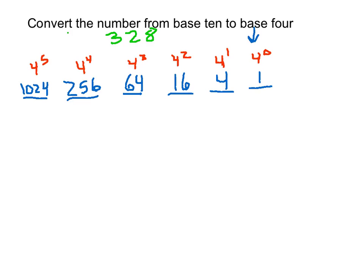Now, we're going to be in base 4. When you're in base 4, you know that you're only allowed to use the digits 0, 1, 2, and 3. We need to place them in these particular place values — these columns — in order to represent 328 objects.